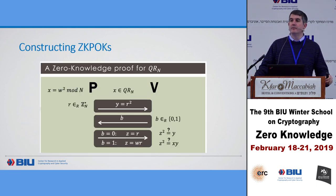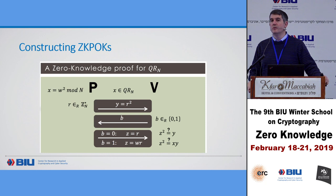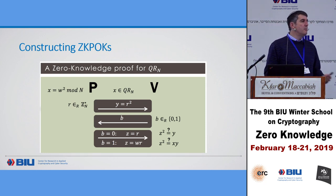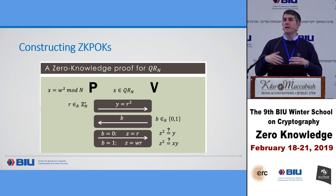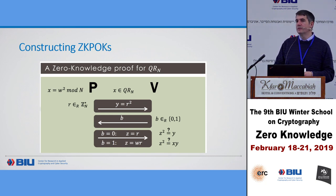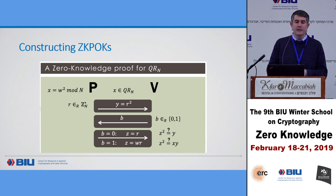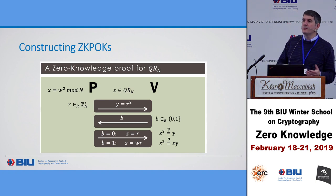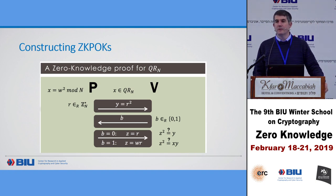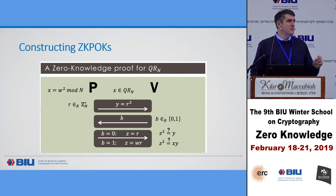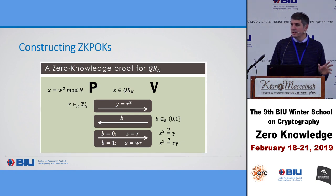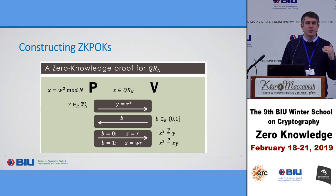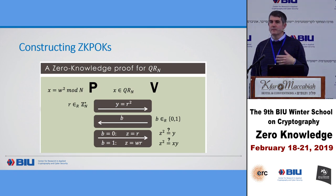Now we want to construct zero knowledge proofs of knowledge. We know how to define them — knowledge is being able to output it — and we've defined it via oracle machines. Now I want to look at protocols you already saw this morning. Not every zero knowledge proof is a proof of knowledge — for example, the trivial El Gamal public key example is clearly a zero knowledge proof but certainly not a proof of knowledge. Just saying 'yes' is not a proof of knowledge.